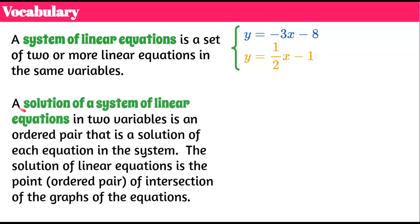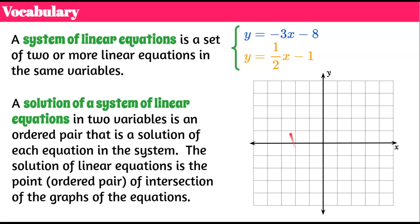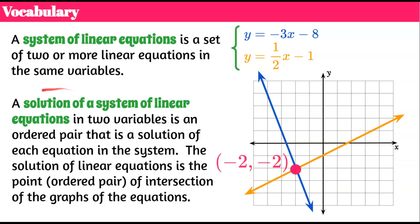Our second vocabulary word: a solution of a system of linear equations in two variables is an ordered pair that is a solution of each equation in the system. The solution is a point or ordered pair at the intersection of the graphs of the equations. Here on the coordinate plane, the blue line is y equals negative 3x subtract 8 and the orange line is y equals one half x subtract 1. The point where they intersect, negative 2, negative 2, is our solution — the only ordered pair that satisfies each equation in the system.